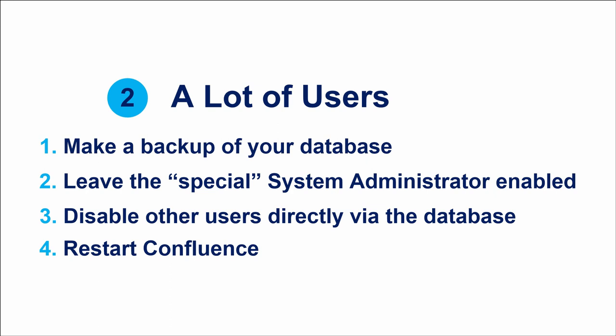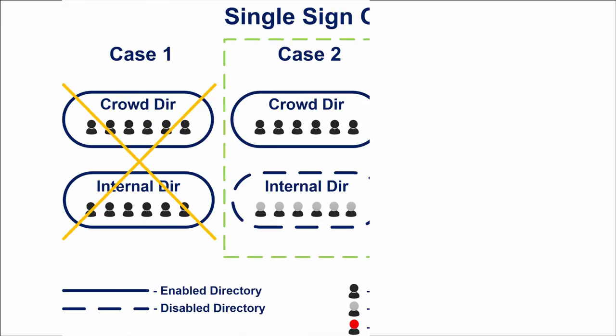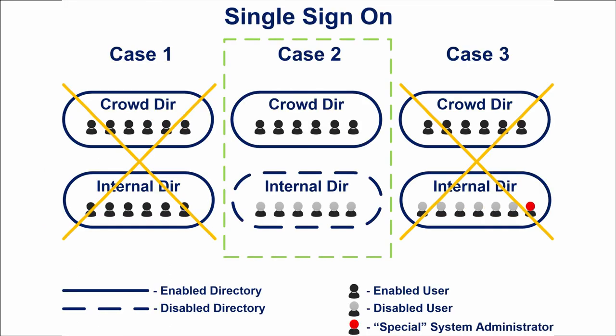We won't cover database changes in this course because it's quite dangerous. Always make a backup of your database before making changes and restart Confluence afterward so that changes can be applied. One more important point: if you want to enable the single sign-on feature, note that it works with one directory only, which must be Crowd. In this case, you won't be able to use the special system administrator from the Confluence internal directory.